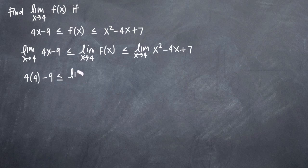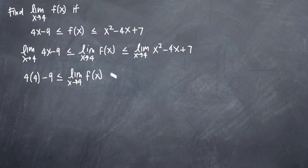We'll leave this limit as x approaches 4 of f(x) because that whole piece right there is what we're trying to solve for. And then we'll call that less than or equal to, and again here we'll plug in 4 for x so we'll get 4 squared minus 4 times 4 plus 7.